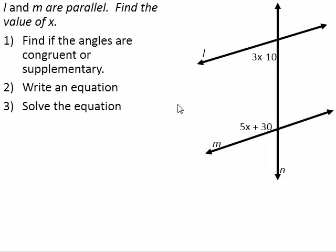In this video, we're going to be using angle relationships with parallel lines to solve for a variable. There are three steps we're going to go through. The first step is to find out whether the angles are congruent or supplementary. The second step is to write an equation, and our third step will be to solve that equation.